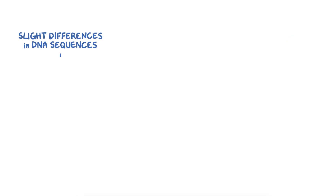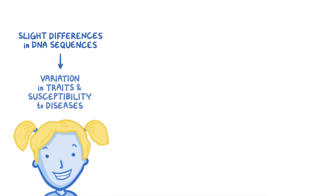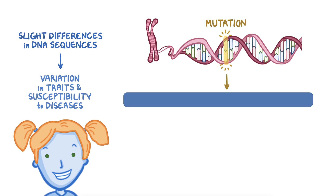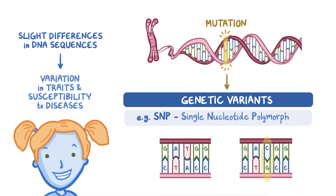Slight differences in DNA sequences account for some of the variation seen in human traits and susceptibility to certain diseases. Changes in the DNA sequence are caused by mutation and are called genetic variants. Variants can be as small as a single nucleotide, referred to as a SNP, or single nucleotide polymorphism.